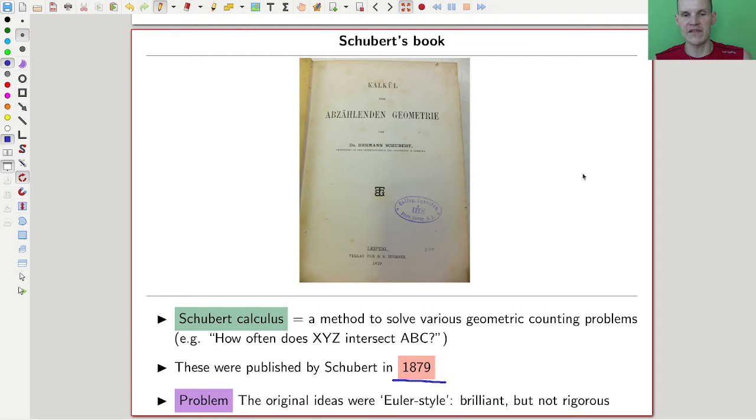And Schubert wrote this book, which I call Euler style. And by this I mean, like Euler, like extremely brilliant, like a master of manipulation of infinite series and all that fun stuff. But it's not quite rigorous what Euler did. Of course, in hindsight, you can definitely justify it.